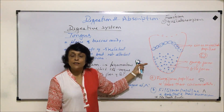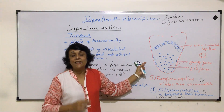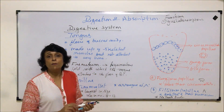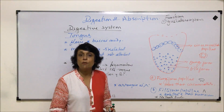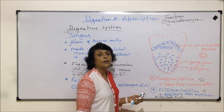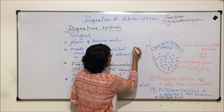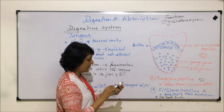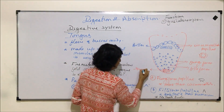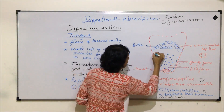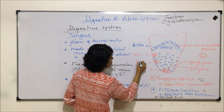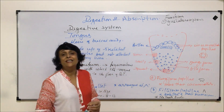Our tongue perceives taste, and this taste is detected by the taste buds. Taste buds are found on the circumvallate as well as on fungiform papillae. These taste buds are chemoreceptors — they receive the chemicals present in our food. The posterior part of the tongue perceives or detects bitter taste. The tip of the tongue detects sweet taste, and on the sides it detects sour and then salty.